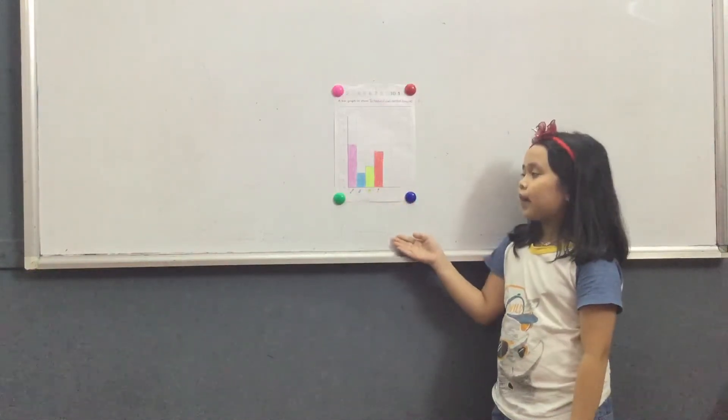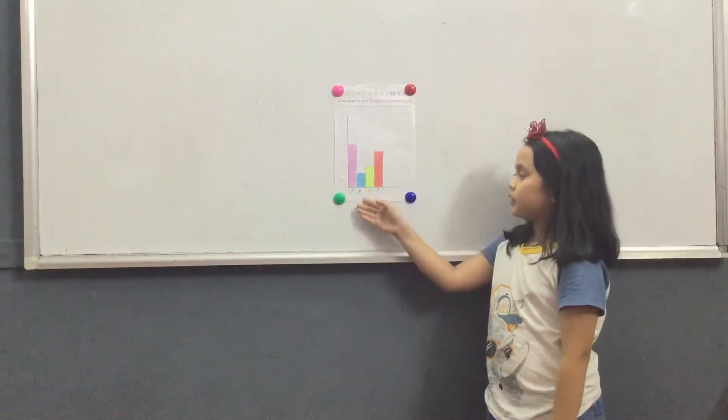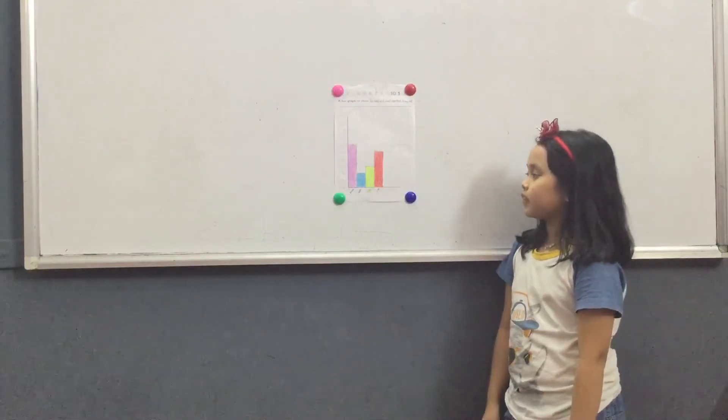None of the classroom items are equal. The number of rulers is the least, there are only 2 rulers. The number of pencils is the greatest, there are 6 pencils.